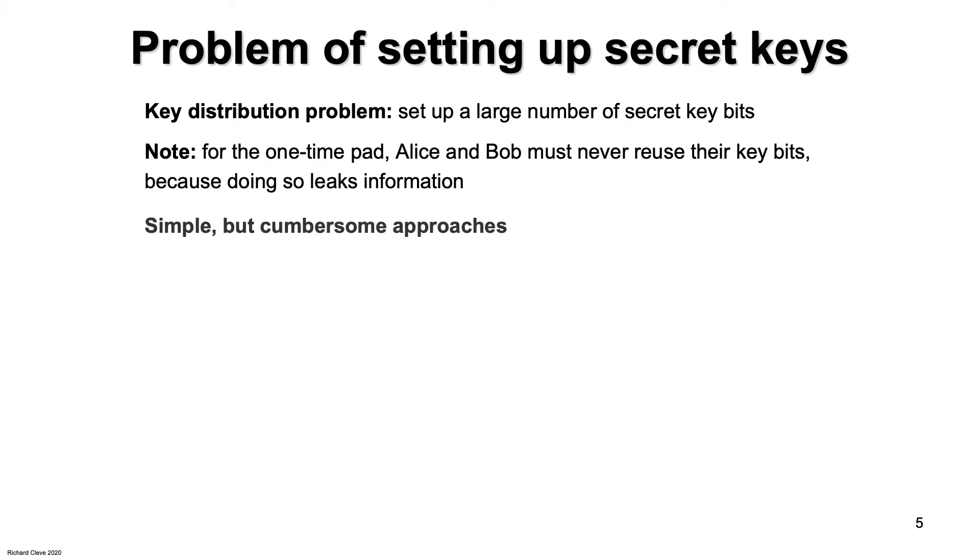Here are some simple but cumbersome ways that Alice and Bob can set up a key. They can physically get together in some secure location and carry out some procedure for generating the random bits. Each stores a copy on some memory device. Or, if there is some third party that they each trust, that third party can provide each of them with a copy of a secret key. Of course, that third party would have to have a secure way of sending the information. A simple way is to visit each of Alice and Bob.